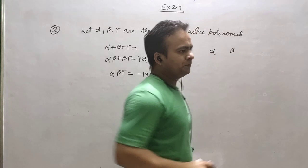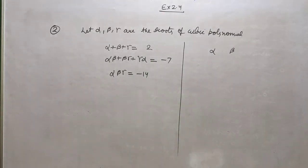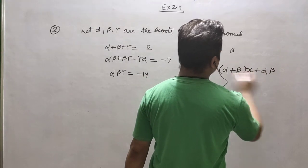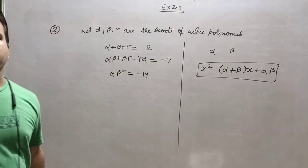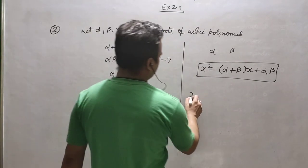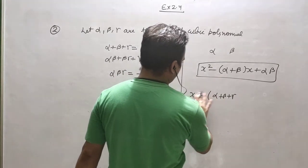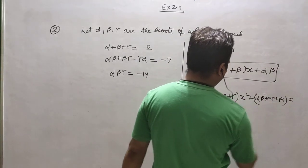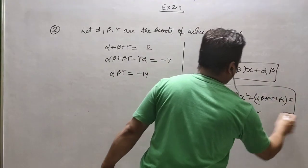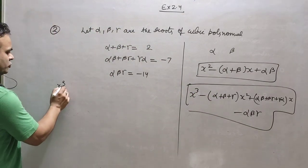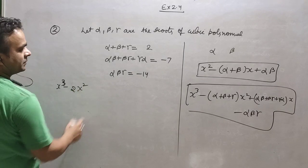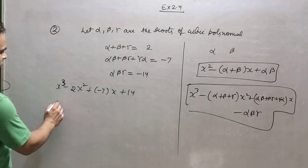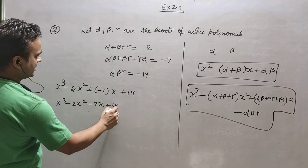I want to take you to the quadratic case first. If there are alpha and beta roots, how do you find the polynomial? It is x squared minus (sum of roots)x plus (product of roots). Here for cubic we follow the same: x cubed minus (sum of roots)x squared plus (alpha beta plus beta gamma plus gamma alpha)x minus alpha beta gamma. So same here: x cubed minus 2x squared minus 7x plus 14.